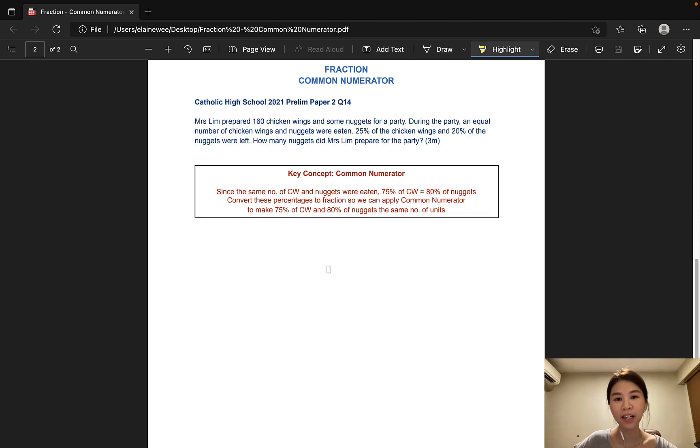The second question is taken from Catholic High School, and it is worth 3 marks. Mrs. Lim prepared 160 chicken wings and some nuggets for a party. During the party, an equal number of chicken wings and nuggets were eaten. 25% of the chicken wings and 20% of the nuggets were left. How many nuggets did Mrs. Lim prepare for the party?